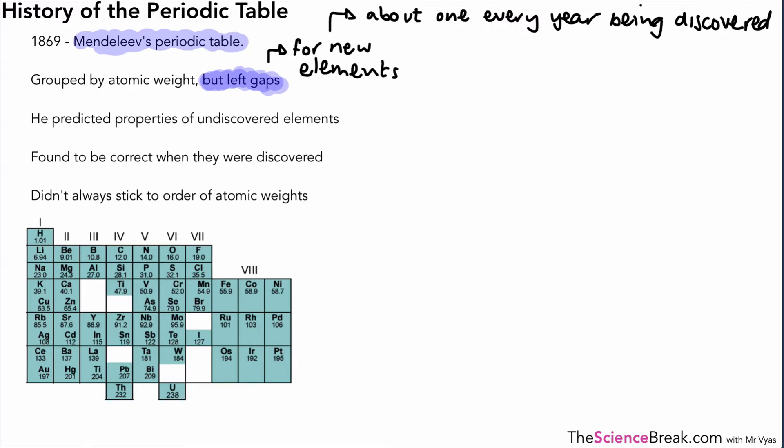What he also did though, he predicted the properties of those undiscovered elements, so where the gaps were he looked at the elements around it and made predictions of the element that would fit in those gaps. The other thing is that when those elements were actually finally discovered he was found to be correct in terms of the properties or very close to the properties and that gave a lot of credibility to his ideas about the periodic table.